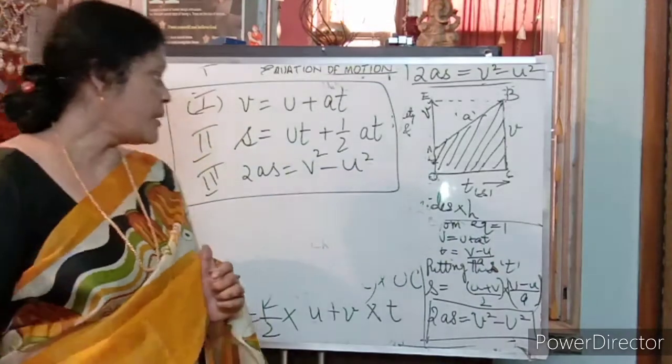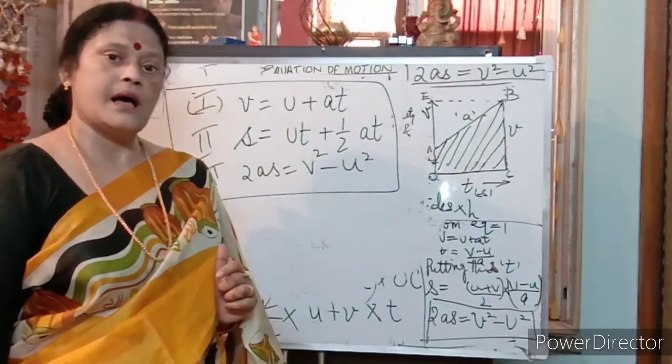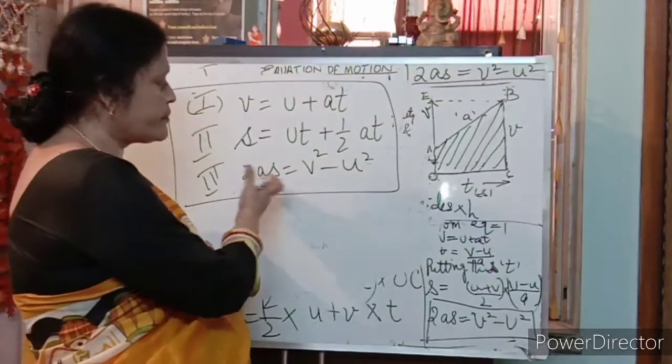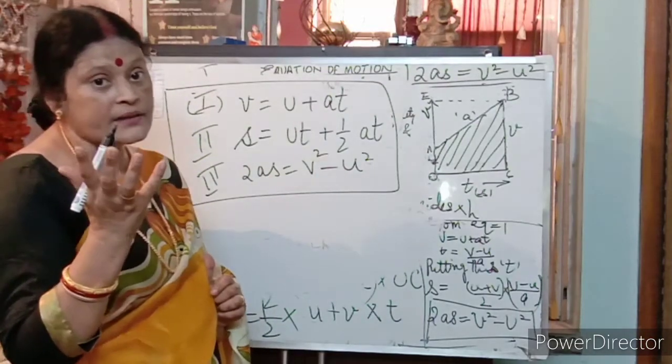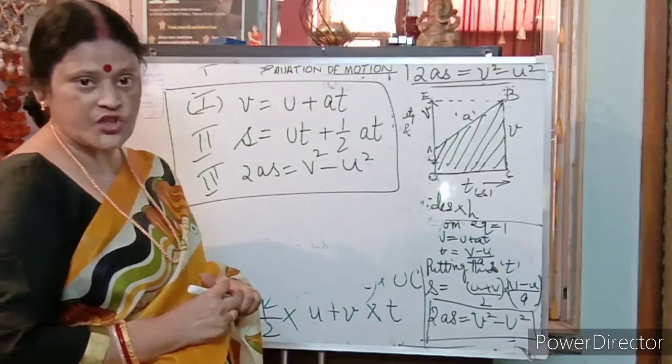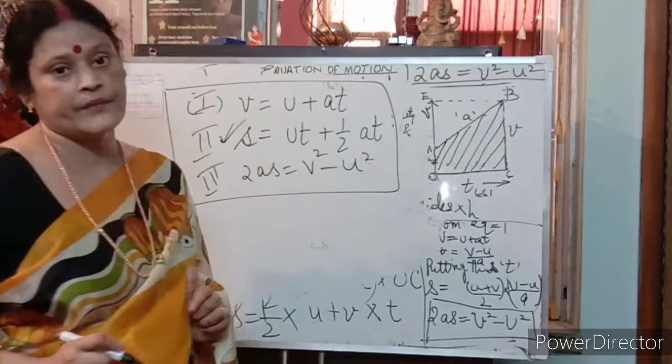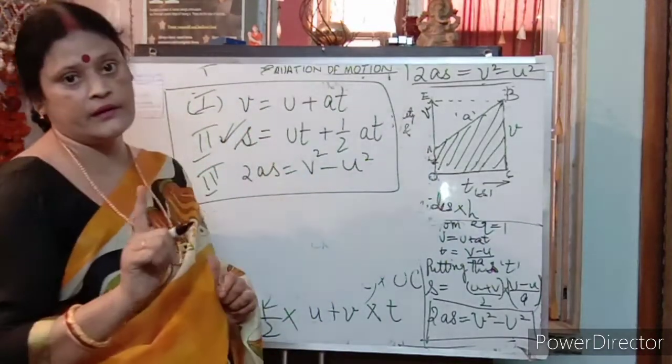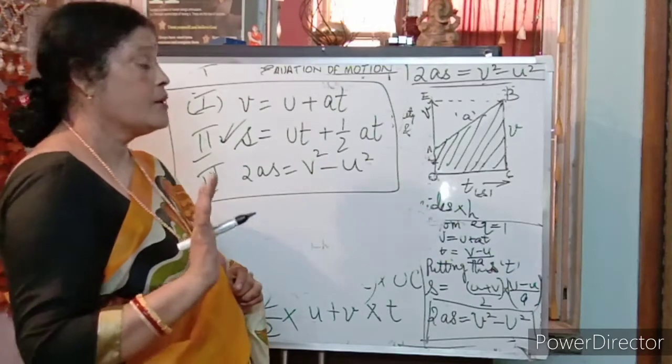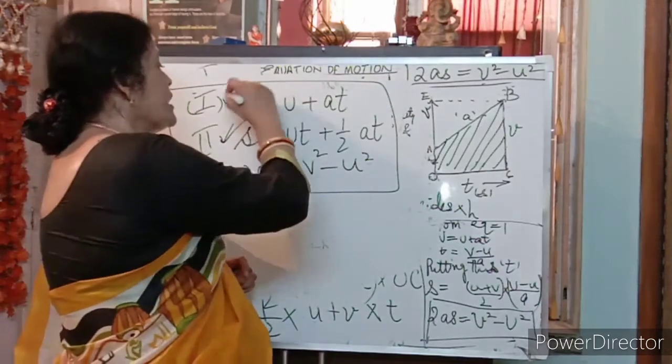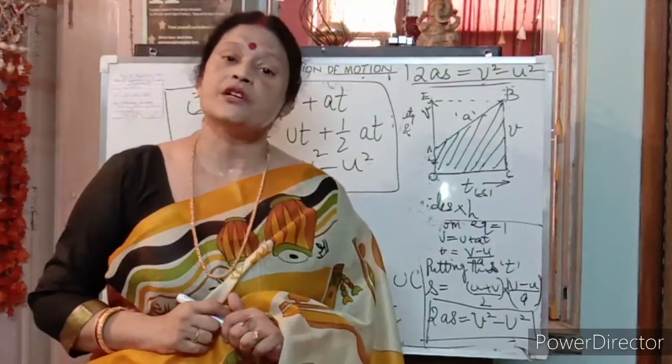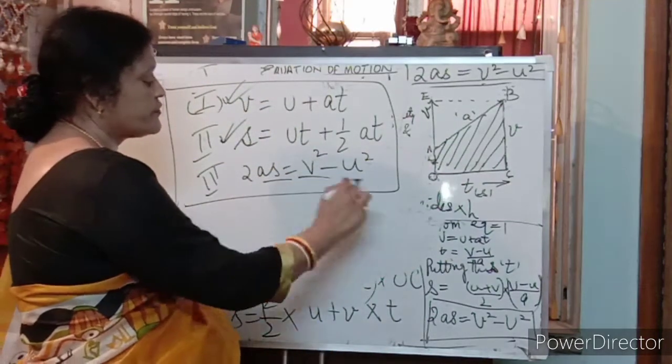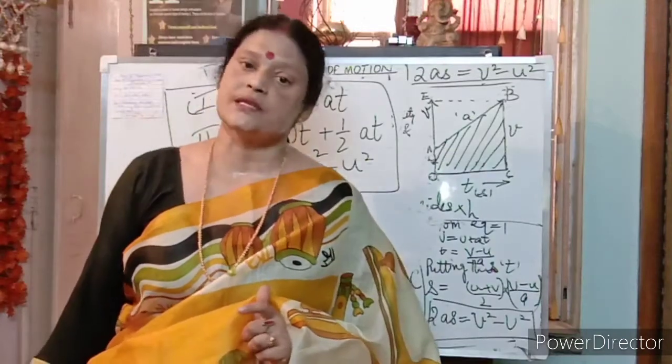Aapke exam mein, when they ask the question, they will ask derive position time graph. Which one? Yaha toh time hai hi nahi. Yeh toh ho hi nahi sakta. Position ki baat kar hai hai, matlab S ki baat ho rahi hai. Toh jab position time graph ki baat ho rahi hai, I am talking about this. Next is velocity time graph. T jab aa raha hai, yaha toh T hai hi nahi. Toh hume yaha toh T ka koi kaam nahi hai. Position, velocity, velocity time graph. Aapko equation ne denge, they will ask like this. First one is velocity time graph. Second one is position time graph. And the third one is position velocity graph.